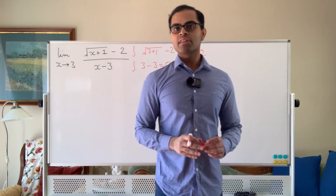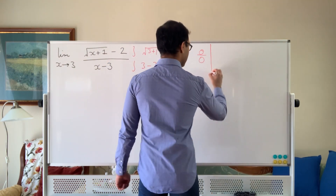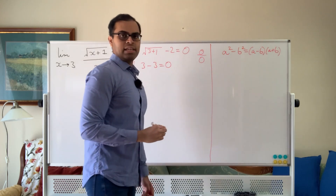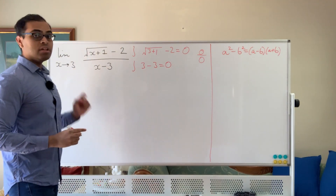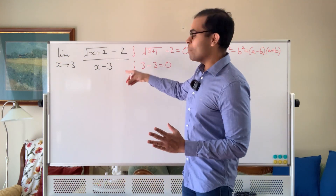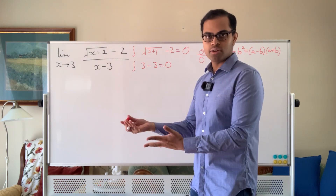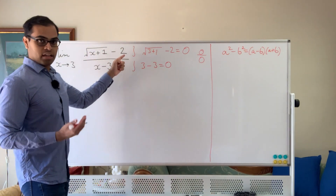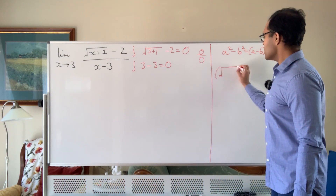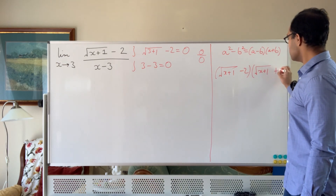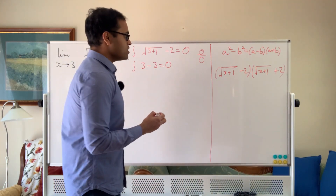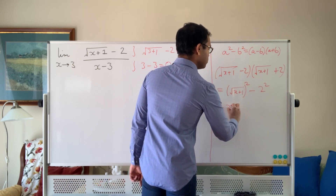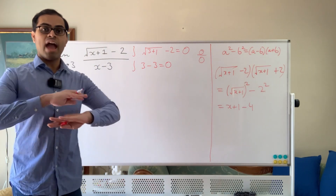It's motivated by the difference of squares formula: a squared minus b squared equals a minus b times a plus b. The point is, if we have this numerator with a square root, we want to get rid of it. If we imagine a as root x plus 1 and b as 2, then root x plus 1 minus 2 times root x plus 1 plus 2 gives us the square root of x plus 1 squared minus 2 squared, which equals x plus 1 minus 4.